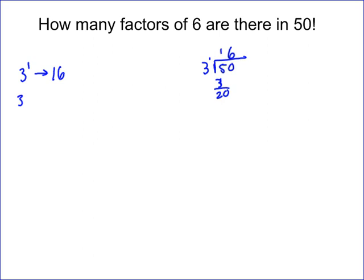How many 3 to the seconds? 3 squared is 9, and 9 goes into 50 five times — remainder 5, but again we ignore remainders. Then 3 to the third is 27, and 27 goes into 50 just once.